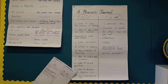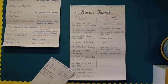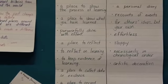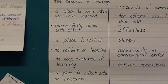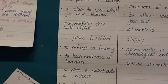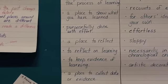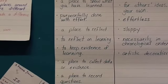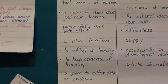In class we talked about what a process journal is and is not. A process journal is a place to show the process of learning, a place to show what you have learned, it needs to be purposefully done with effort, and a place to reflect and to reflect on learning.